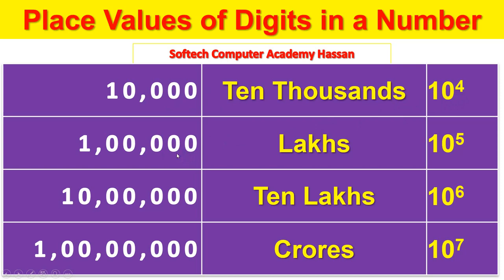Ones, tens, hundreds, thousands, ten thousands — that is 10 to the power of 5.